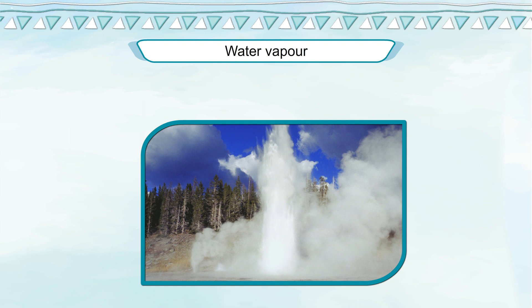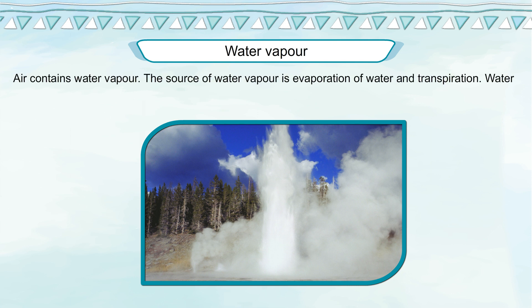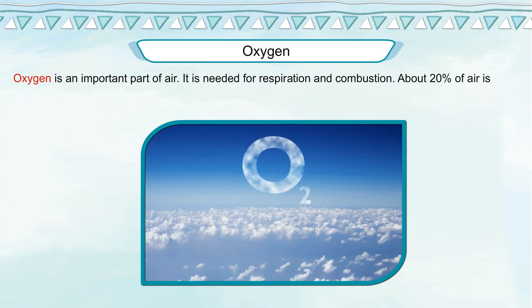Air contains water vapour. The source of water vapour is evaporation of water and transpiration. Water vapour regulates the temperature of air. Oxygen is an important part of air — it is needed for respiration and combustion. About 20% of air is oxygen.